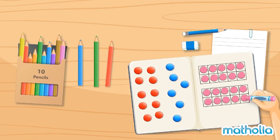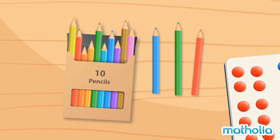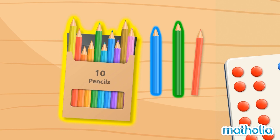Let's count the things on the table. How many colour pencils are there? There are ten in the packet. Let's count on from ten. Ten, eleven, twelve, thirteen. There are thirteen colour pencils.